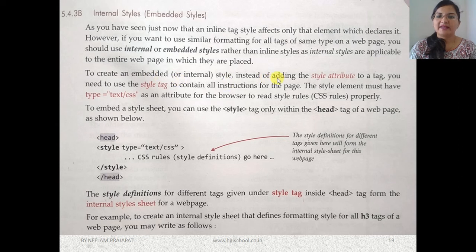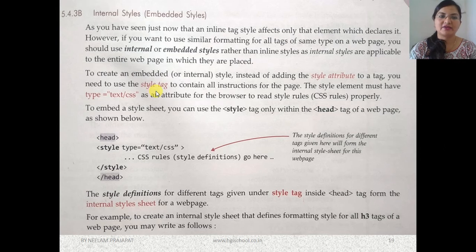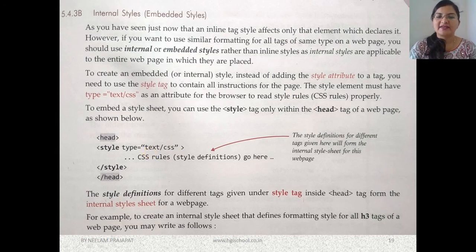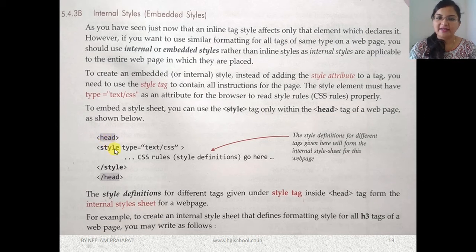To create an embedded style, instead of adding the style attribute directly to a tag, you put the style element in the head section. The style element must have the attribute type set to text/css for the browser to read the style rules. You write the style tag inside the head tag — it can be placed below or above the title tag.